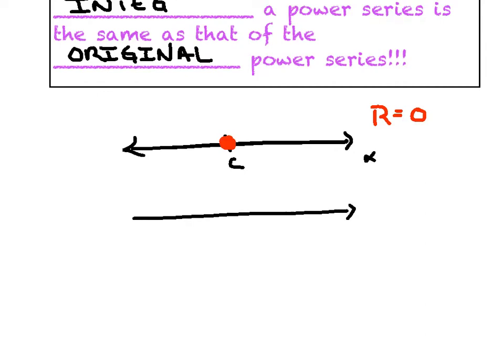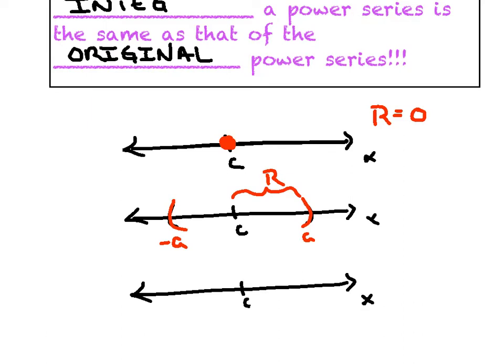Outcome number two says, you know what, we're going to do a little better than that. We're going to converge at C and on a certain interval. We're converging all the way from some negative A to positive A that's centered around C. And the length from there to there is considered your radius of convergence. And the third possible outcome is the best case scenario. We're going to get an exact match for all values of X. It's going to converge all the way from negative infinity to positive infinity. And our radius is now going to have a length of infinity.